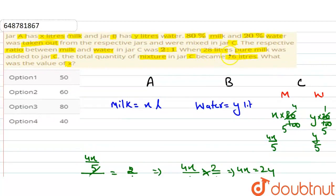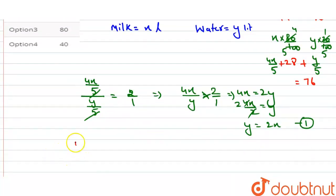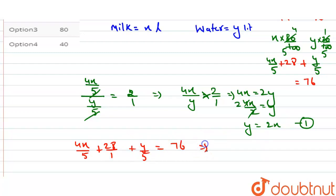آگے ہمیں ملا: when 28 liters pure milk was added to jar C، total quantity of mixture in jar C becomes 76 liters. تو milk میں 28 liter add کر دیں: 4x/5 plus 28 plus y/5 is equal to 76 liter ہو جائے گا. یہاں سے ہم x اور y کا relation find out کر سکتے ہیں۔